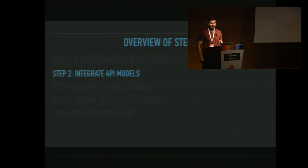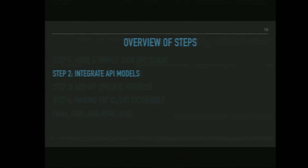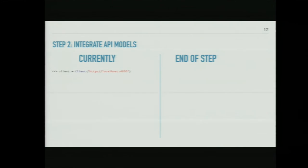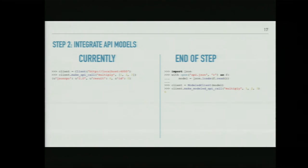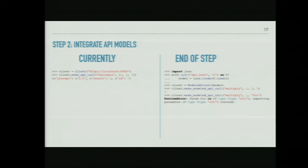Now let's talk about step two: integrating API models into the client. Currently we can create a client and make a generalized API call. By the end of this step, we'll load a JSON model and have a new client class consume it — enabling modeled API calls that know whether to accept positional or keyword arguments and output only the result. And if I pass an incorrect parameter type like the string 'foo' instead of an integer, it will throw a runtime error saying it expected type integer.